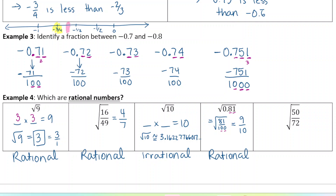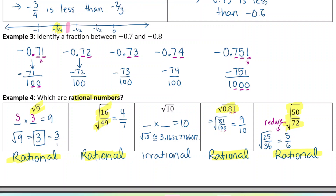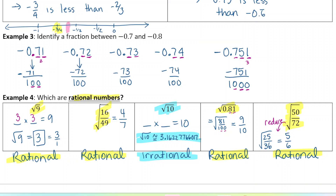The last and hardest one: square root of 50 over 72. Upon immediate inspection, it doesn't look like we can take the square root of 50 or 72, so you might think this is irrational. But we can reduce this fraction — if we divide the numerator and denominator by 2, we get an equivalent fraction, and then you'll discover you can take the square root of numerator and denominator, giving 5 over 6, which is a fraction. So this is rational. The only irrational number in the list is the square root of 10.